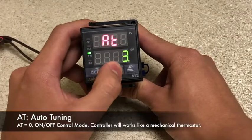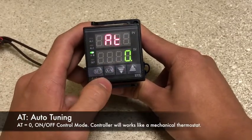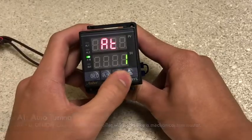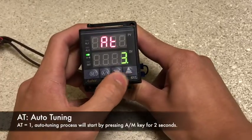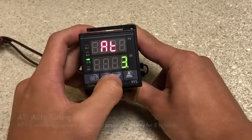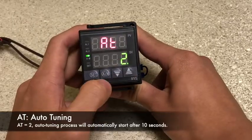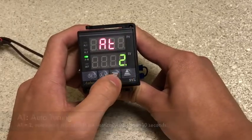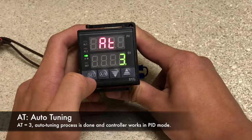AT stands for auto-tune. Now zero is for on-off mode. One, two, and three are for PID mode. One and two activate auto-tune. And three is for when auto-tune is not needed.